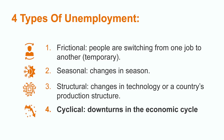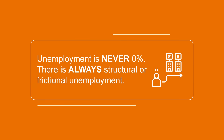Finally, cyclical unemployment is associated with downturns in the economic cycle, such as recessions. It is in these moments when aggregate demand is suppressed, production decreases, and consequently so does employment. Binding all these causes together, we may arrive at one conclusion: the unemployment rate is never zero. There are always people changing between jobs or being laid off because of a structural or seasonal change.